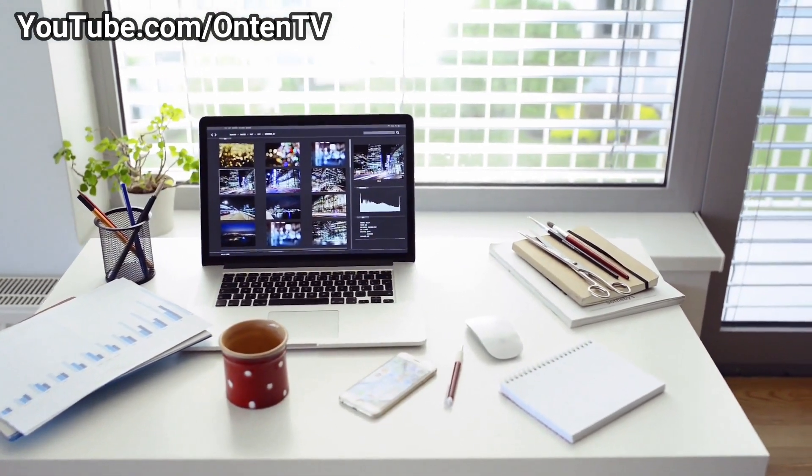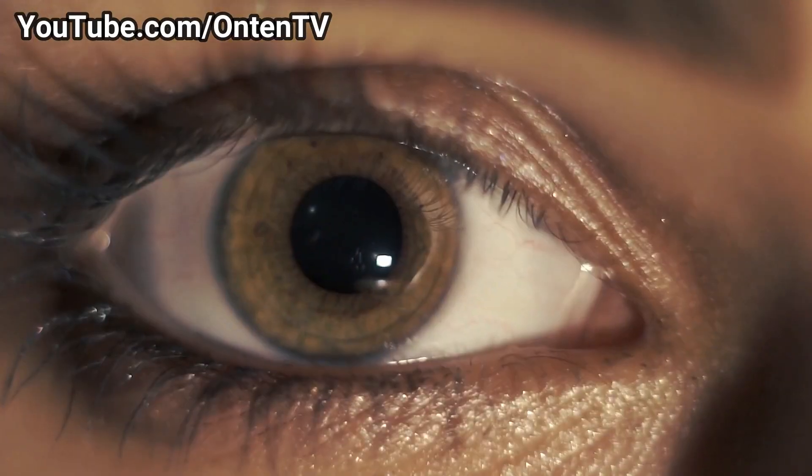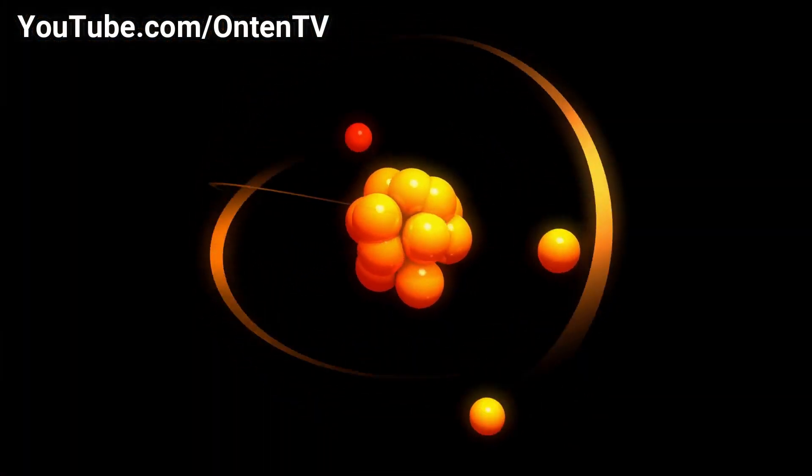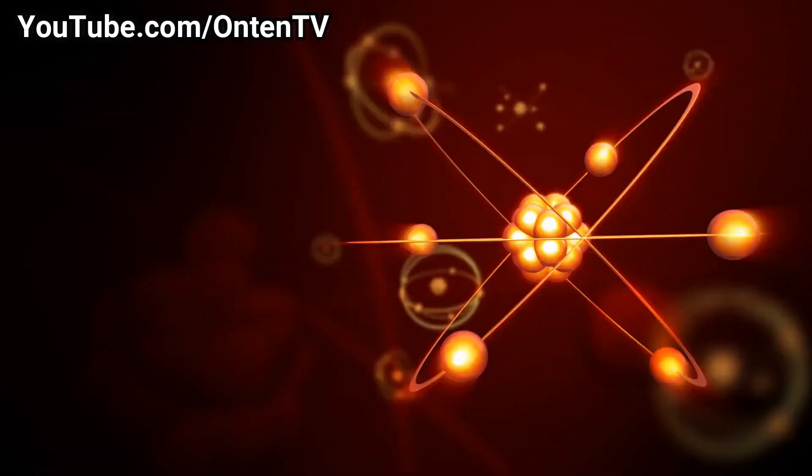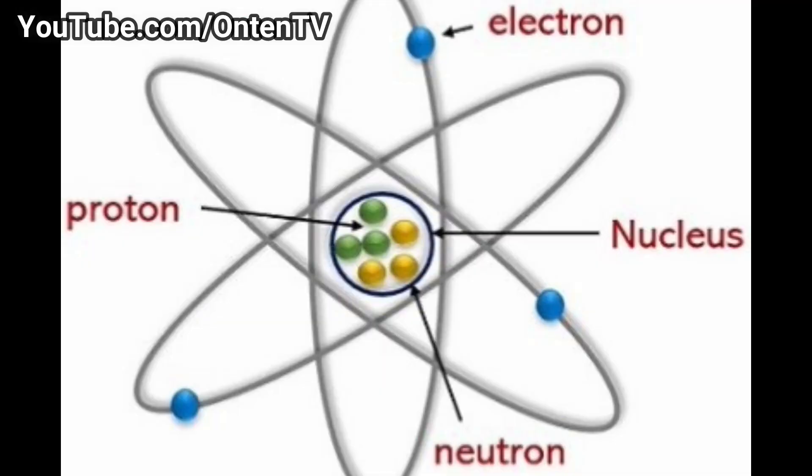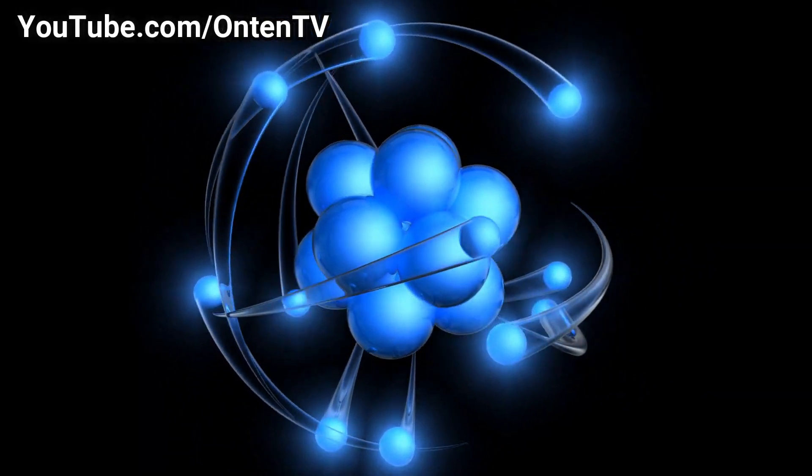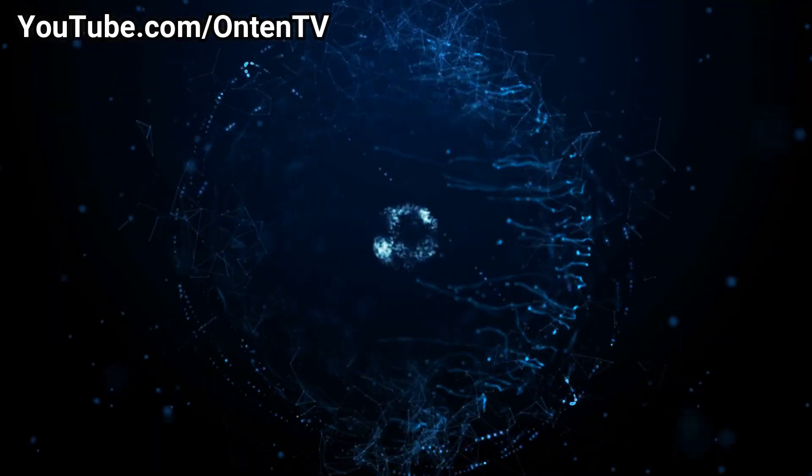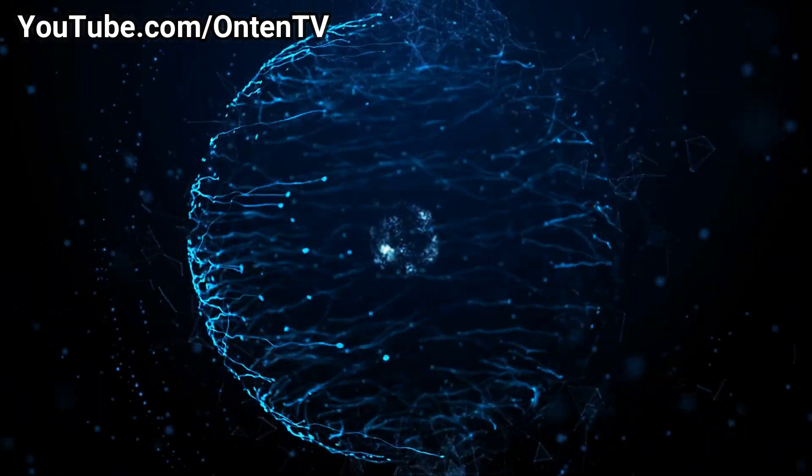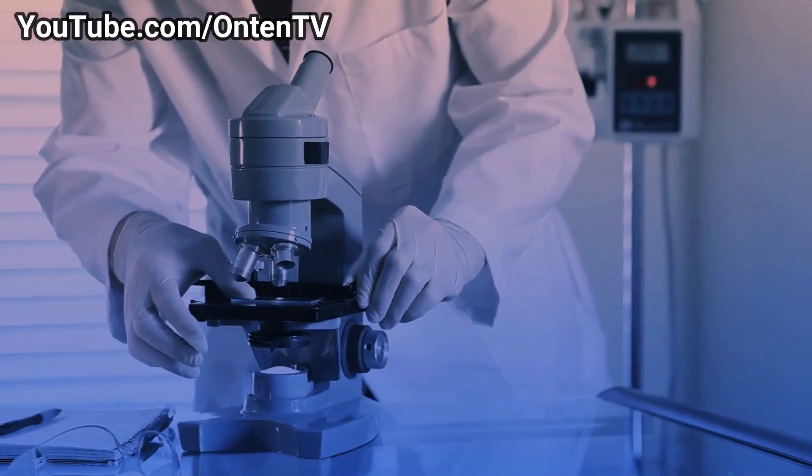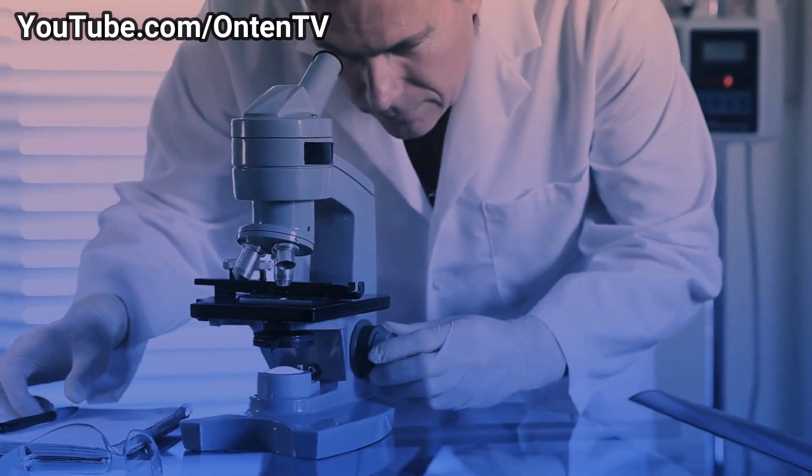We all know that everything around us and even ourselves are made up of little things called atoms. And atoms themselves are made up of smaller particles: neutron, proton, and electron. We all know that atoms are small, but we really don't know how small it is. You're probably just like me and don't know how small an atom actually is. So stay with us and let's go see how small an atom actually is.